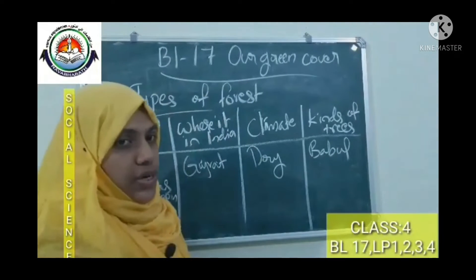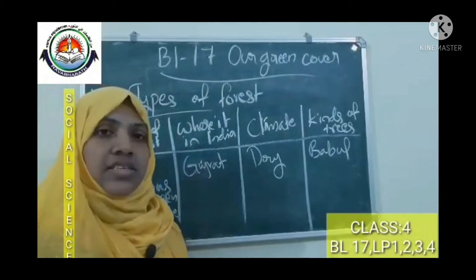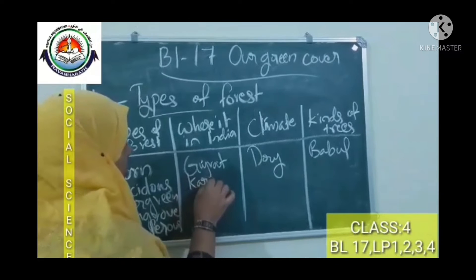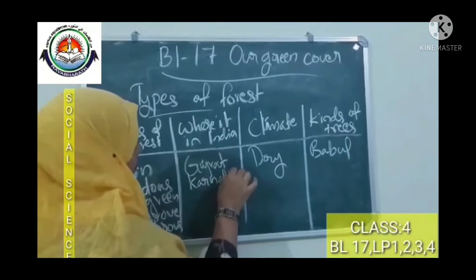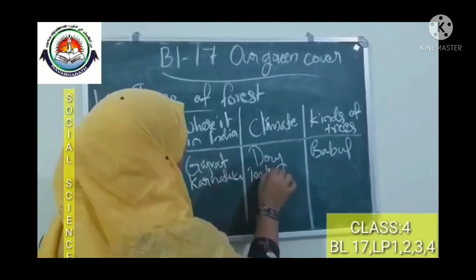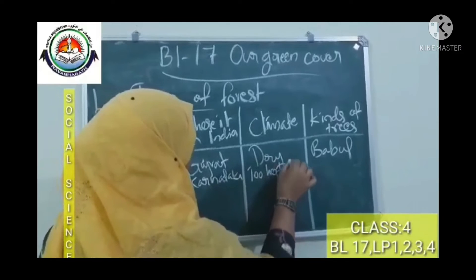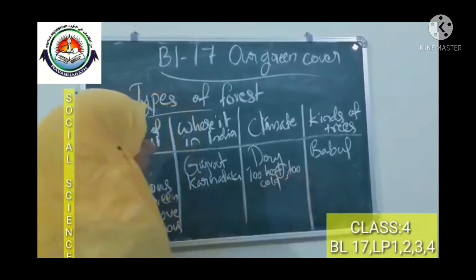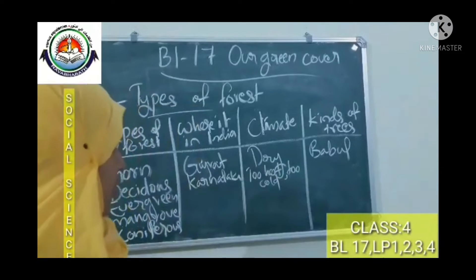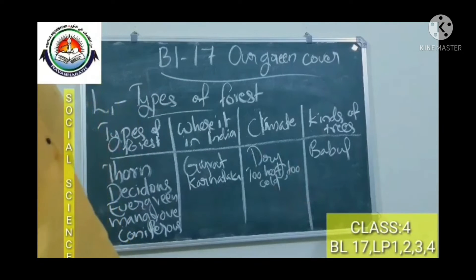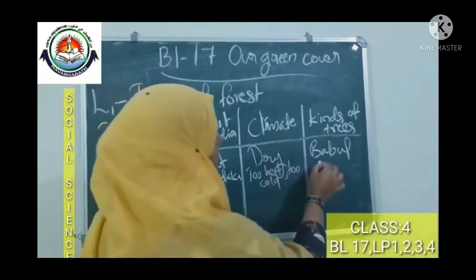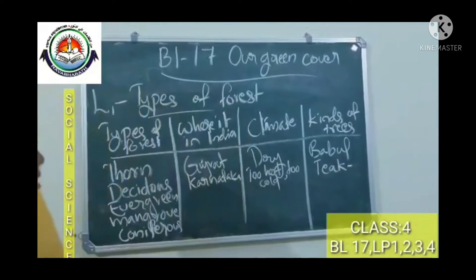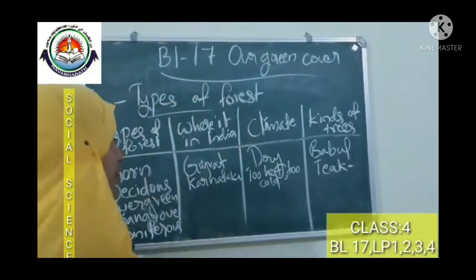Next, deciduous forest. Where is it found in India? Deciduous forests are found in Karnataka, Chhattisgarh, and Odisha. The climate is too hot or too cold. The important tree found in this forest is teak. Next, evergreen forest.